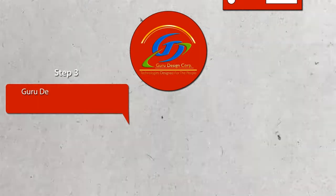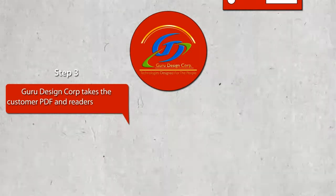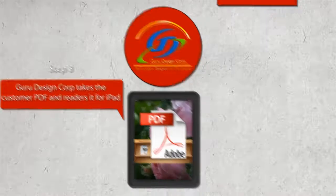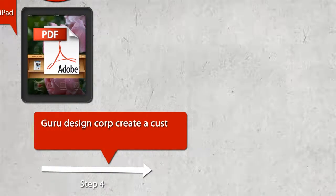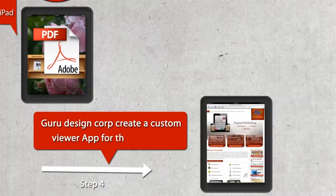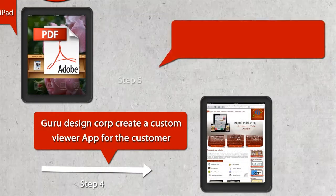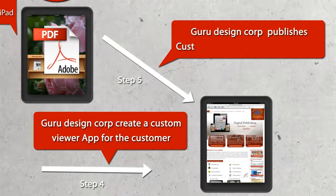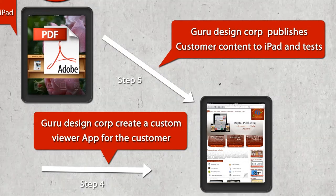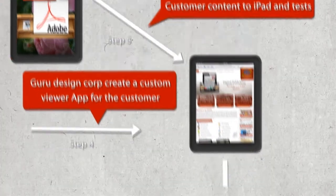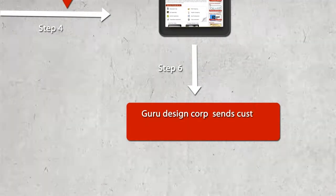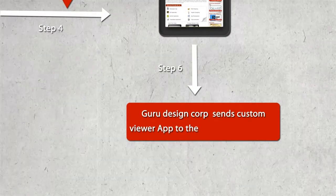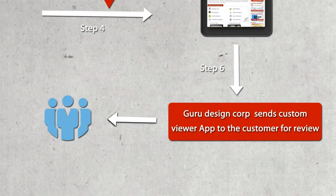Step 3: Guru DesignCorp takes the customer's PDF and renders it for the iPad. Step 4: Guru DesignCorp creates a custom viewer app for the customer. Step 5: Guru DesignCorp publishes the customer content to the iPad and tests. Step 6: Guru DesignCorp sends the custom viewer app to the customer for review.